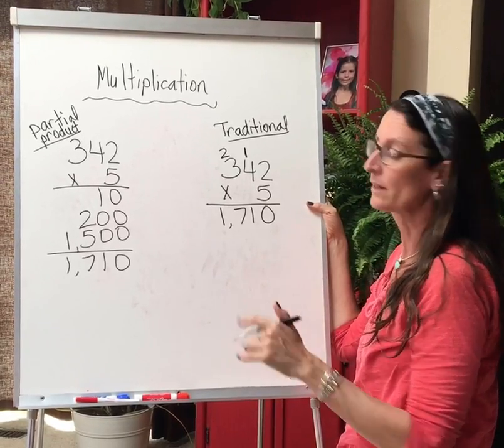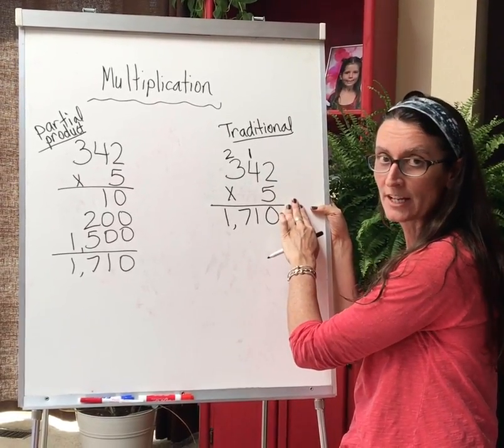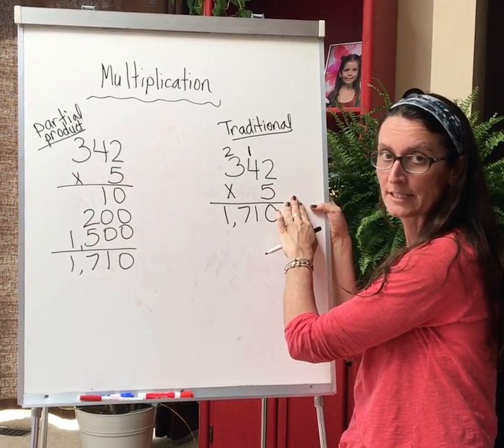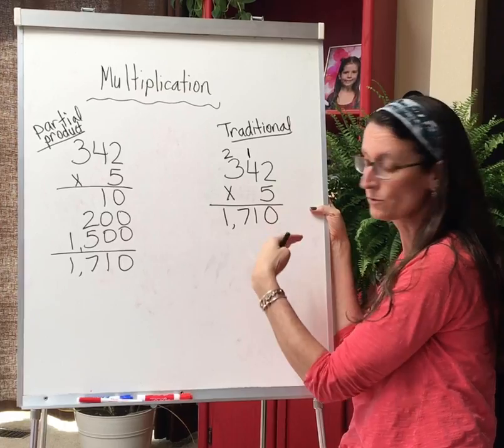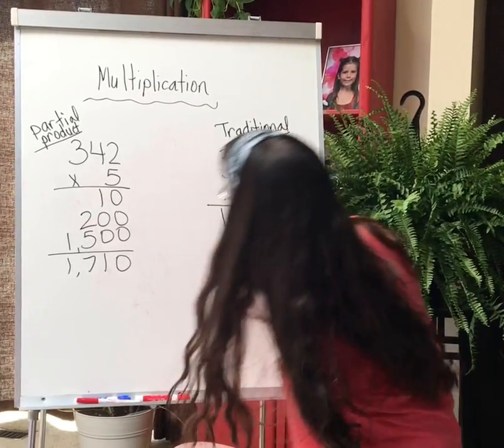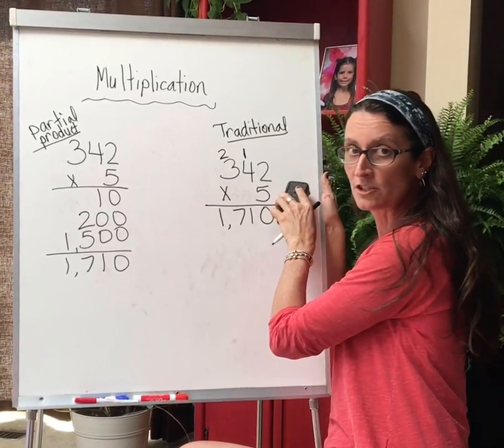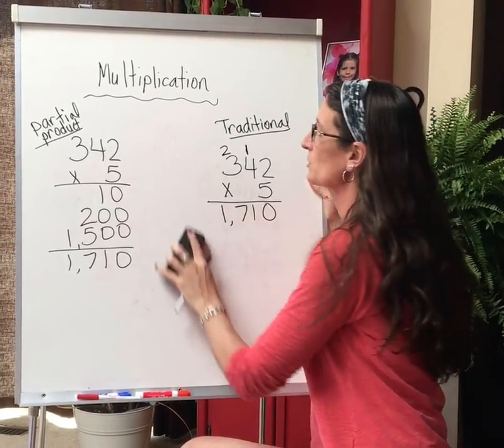Both of them work well. This traditional method is going to have probably a better chance of not making mistakes as you go through things. So I want to do a couple more real quickly and I'm going to stick with the traditional way of doing the multiplication.